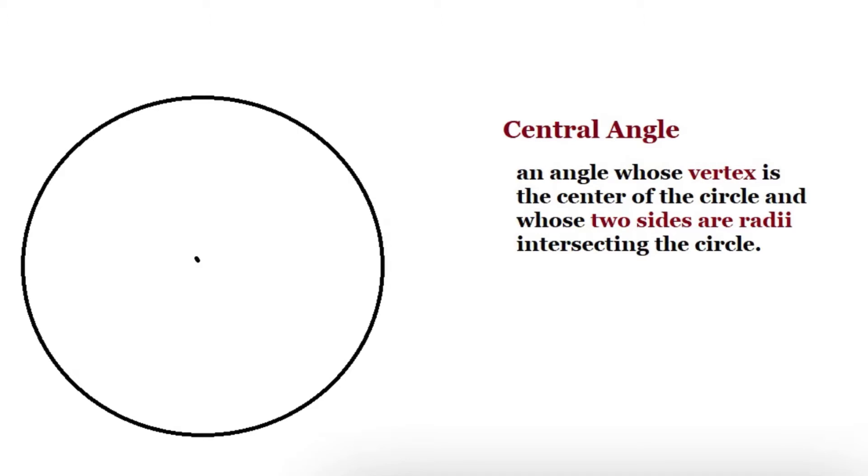So what that means is this is the center of the circle and this is the vertex of the angle. So if I draw two lines from it and I'll label this A, B, C - this is the vertex, this is the angle.